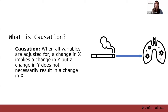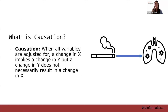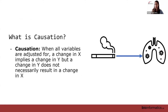We define causation as: when all variables are adjusted for, a change in X implies a change in Y, but a change in Y does not necessarily result in a change in X. Assuming all else is equal, if individuals who smoke have a higher likelihood of lung cancer, then smoking does seem to cause lung cancer — but those with lung cancer are not necessarily more likely to smoke. That asymmetry is how we define causation.